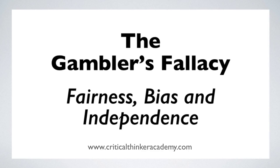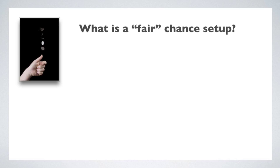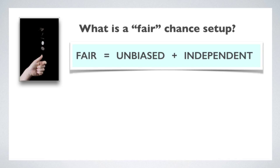In the previous video, we introduced the gambler's fallacy and showed that it can be viewed as a failure to recognize that the outcomes of a fair chance setup must be independent of one another, so the history of past outcomes can have no effect on the probability of the next outcome. Now I want to look more closely at this concept of a fair chance setup. I said that it entails the concept of independence, but really it entails two concepts. It also entails the notion that the outcomes are unbiased.